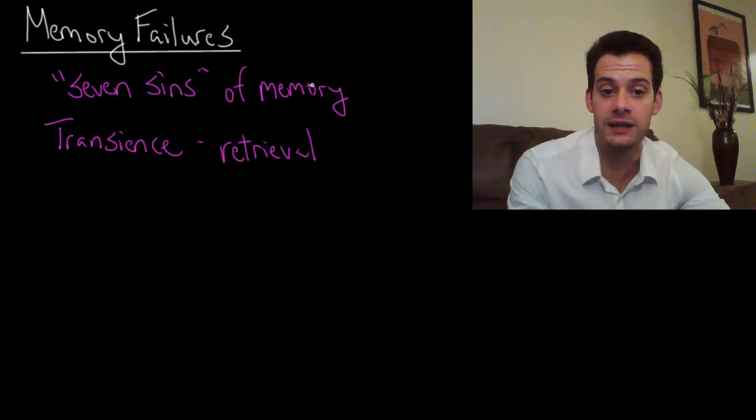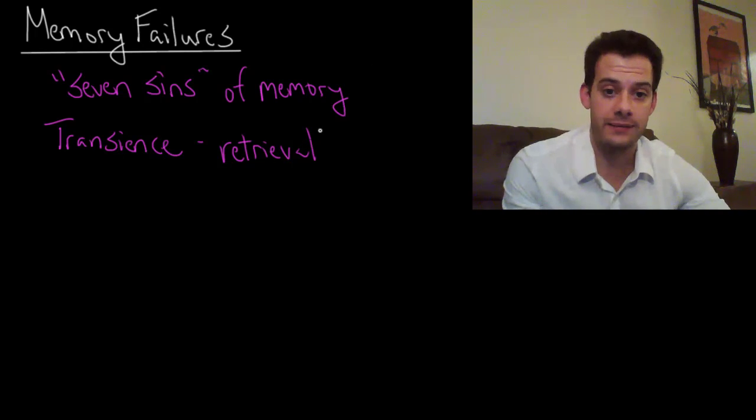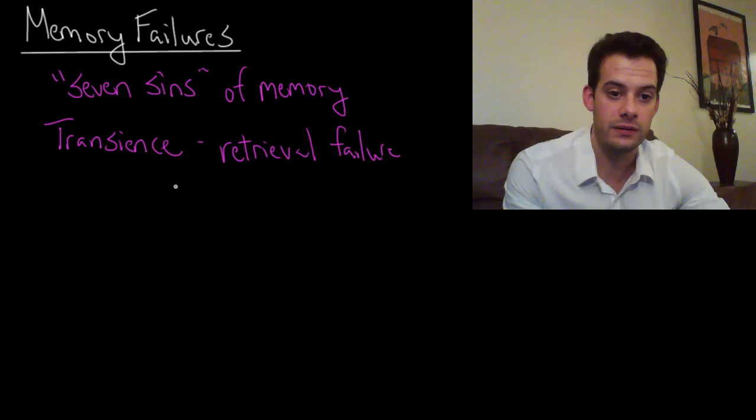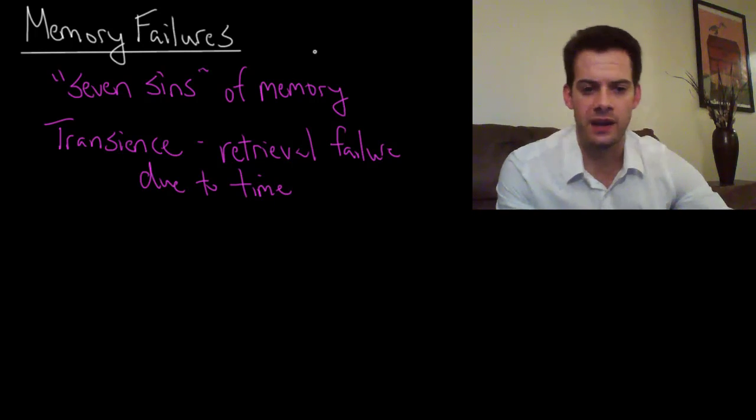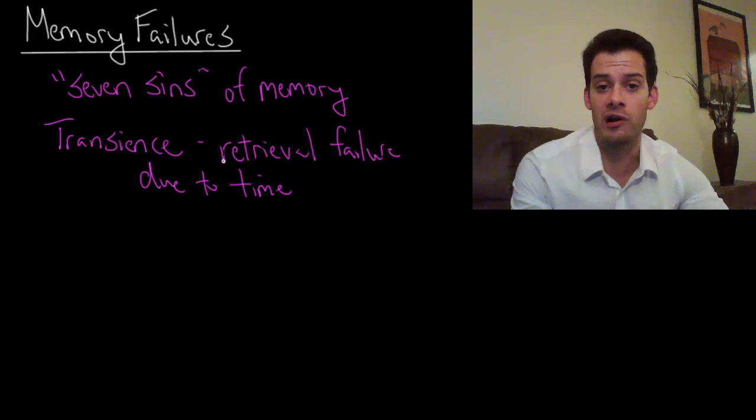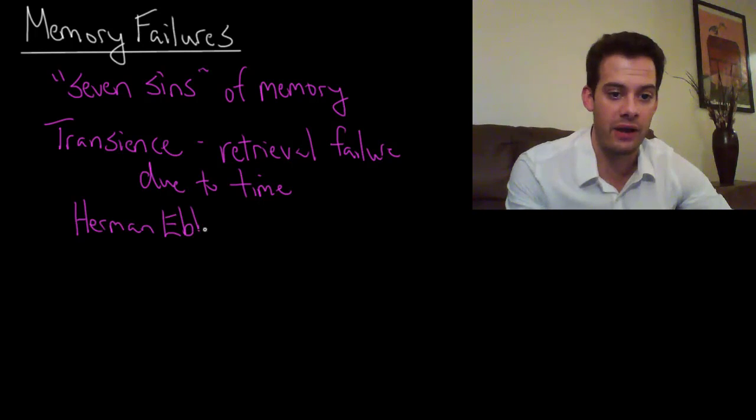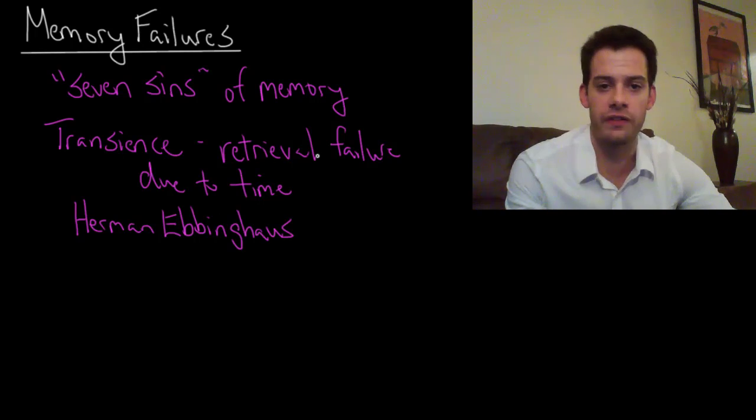You encode the memory correctly and you store it, but over some period of time it fades away. So we have a retrieval failure due to time. Now one of the first researchers to look into this in a systematic way was a guy named Hermann Ebbinghaus. He was a German researcher and we'll talk about him more in a future video. But one of the things that Ebbinghaus did is he measured his ability to recall things over time and he created what he called a forgetting curve.